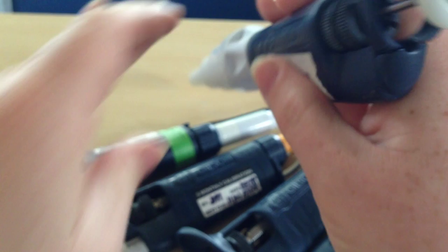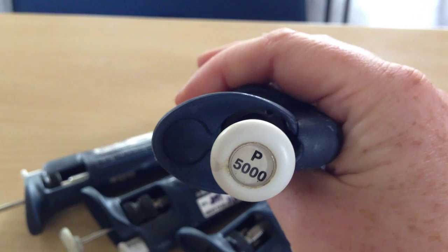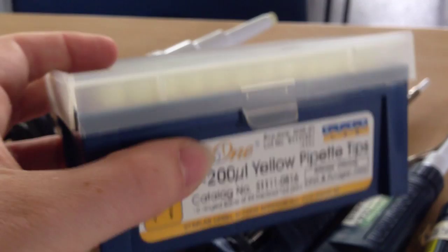And then we have a P5000. That's for 1 ml, 1,000 microliters, up to 5,000 microliters. So that's the first thing you need to know.